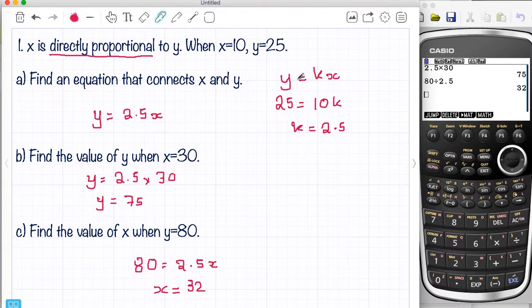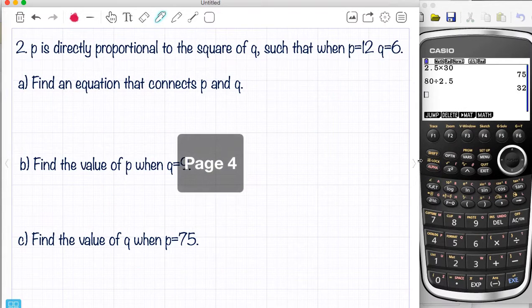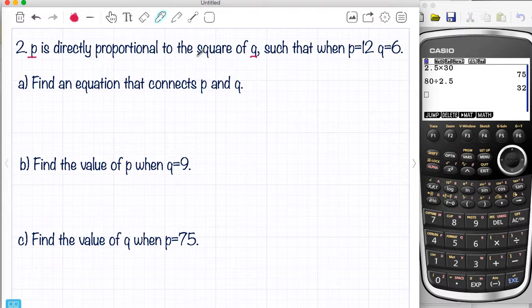So remember that starting point. Now it's going to get slightly harder. And when it gets slightly harder, it's just the language. So I've got different letters. It doesn't always have to be X and Y. So I've got P and Q. But further it says the square of Q. And I've got this magic word in here, directly proportional again.